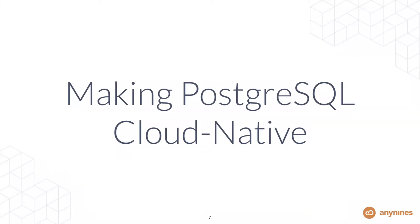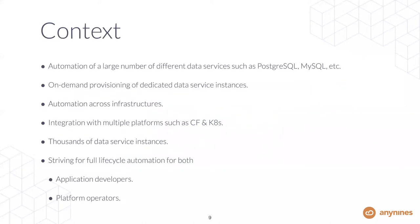After looking into the concepts, we'll have a stronger focus on Kubernetes and look into what building blocks can be used to automate data services—in this particular case, Postgres. There are many ways to do automation, so it makes sense to define a few constraints for better context. You could automate the operation of one very large, important central database at your company, and that is very different from the focus of this talk, which is on operating a large number of data service instances.